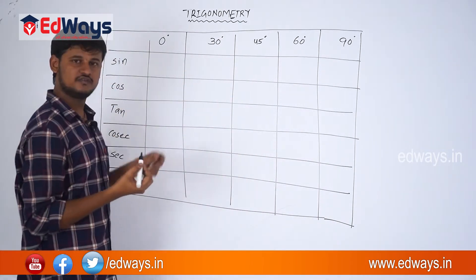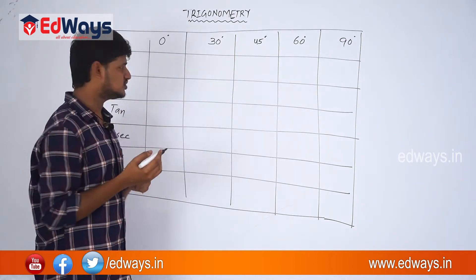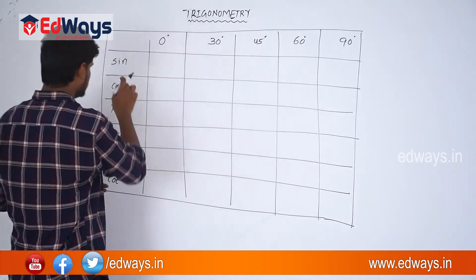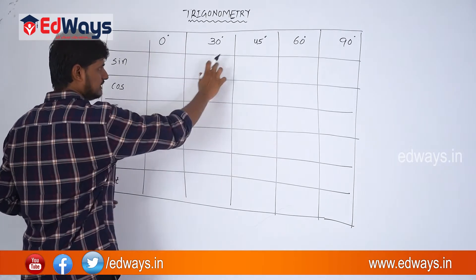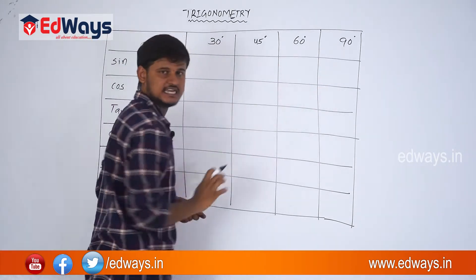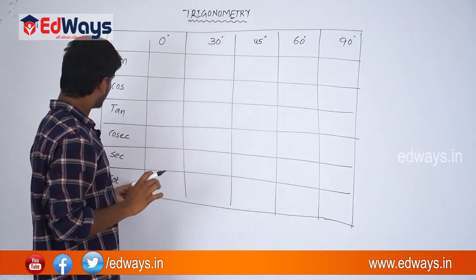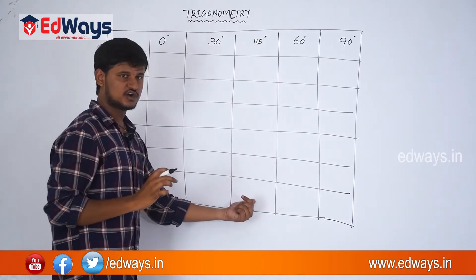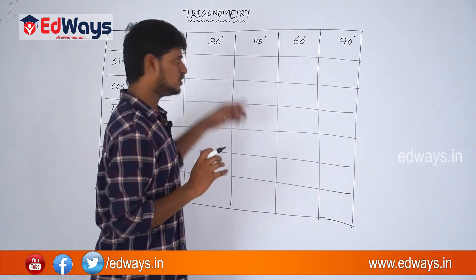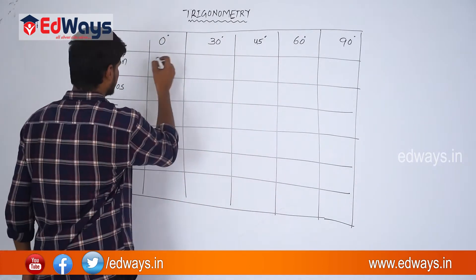Now we have to write all the trigonometric ratio values we already found in the earlier class. So we need: sin 0°, sin 30°, sin 45°, sin 60°, sin 90°, and similarly cot 0°, cot 30°, cot 45°, cot 60°, and cot 90°. Let me write those values here.